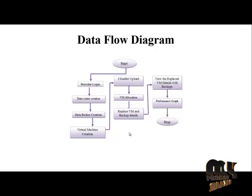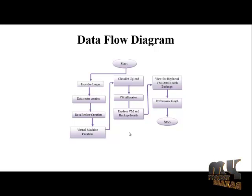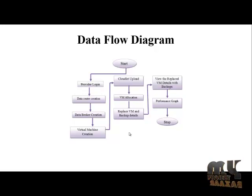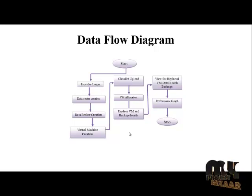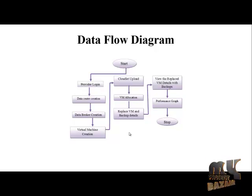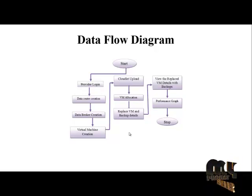These details are fetched from the database and displayed. If a virtual machine is faulted, it is replaced by an unallocated virtual machine, and the old backups are replaced and stored into the newly allocated virtual machines. Finally, the replaced virtual machine details with backups are viewed, and a performance graph is displayed for the virtual machines allocated by the fault replacement.